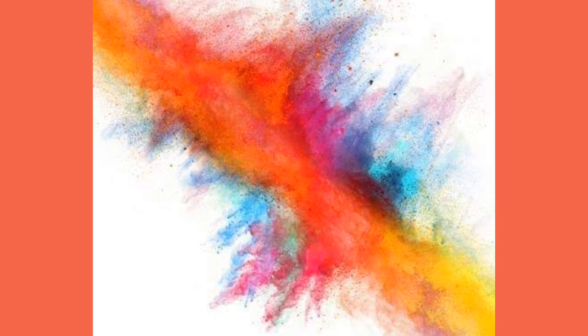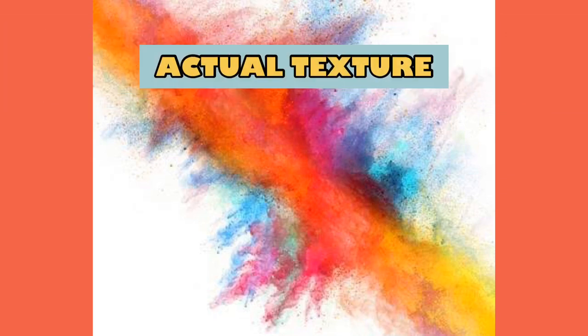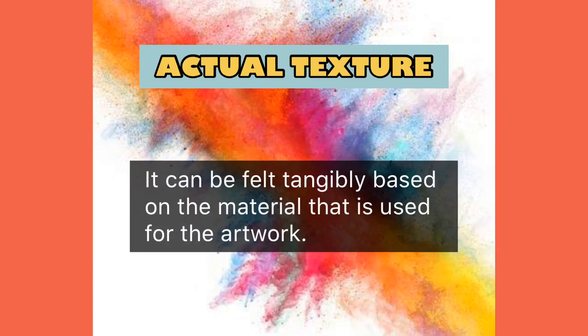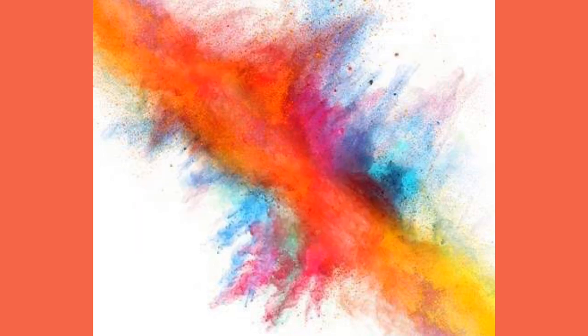We have two kinds of texture. First, we have actual or real texture. Actual texture can be felt tangibly based on the material used for the artwork — you can touch it and judge it by how it feels. For example, if an artist used pebbles on his artwork, there are parts that are hard or rough because of the pebbles used.